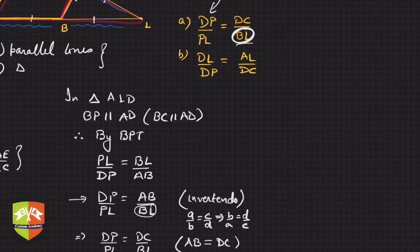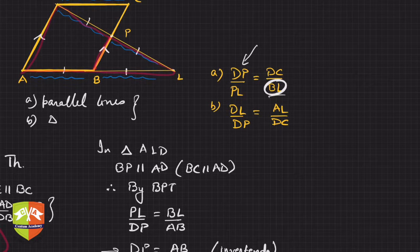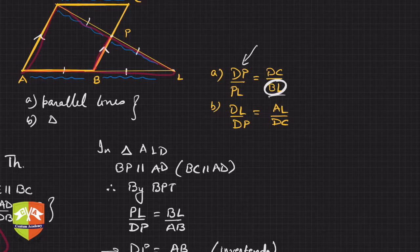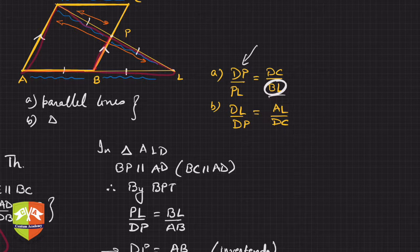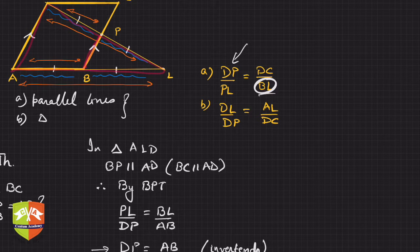For the second part, we need to prove DL upon DP equals AL upon DC. From the diagram, DL is this entire segment, and AL is the whole length. This looks like a corollary to BPT, so again we can work in triangle ALD.